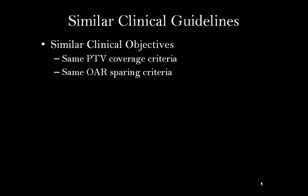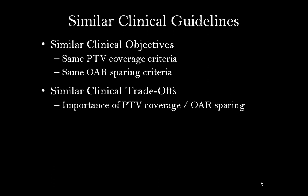Another consideration when selecting a patient is that the patient should follow similar clinical guidelines. This includes having similar clinical planning objectives for all patients in the model. The PTV coverage criteria should be the same — for example, 100% of the prescription covers 98% of the PTV volume. The clinical objectives for organ at risk sparing should also be the same — for example, the volume of the rectum receiving 65 gray should be less than a certain percentage. In addition, patients should have the same clinical tradeoffs between PTV coverage and organ at risk sparing, with the same priority given to PTV versus organ at risk for all patients.